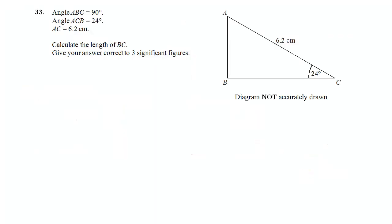OK, next question. We're given a triangle again, and we're told that angle ABC is 90 degrees, which is as it appears on the diagram. We're given an angle and a side, and this time we want to find a length, BC.